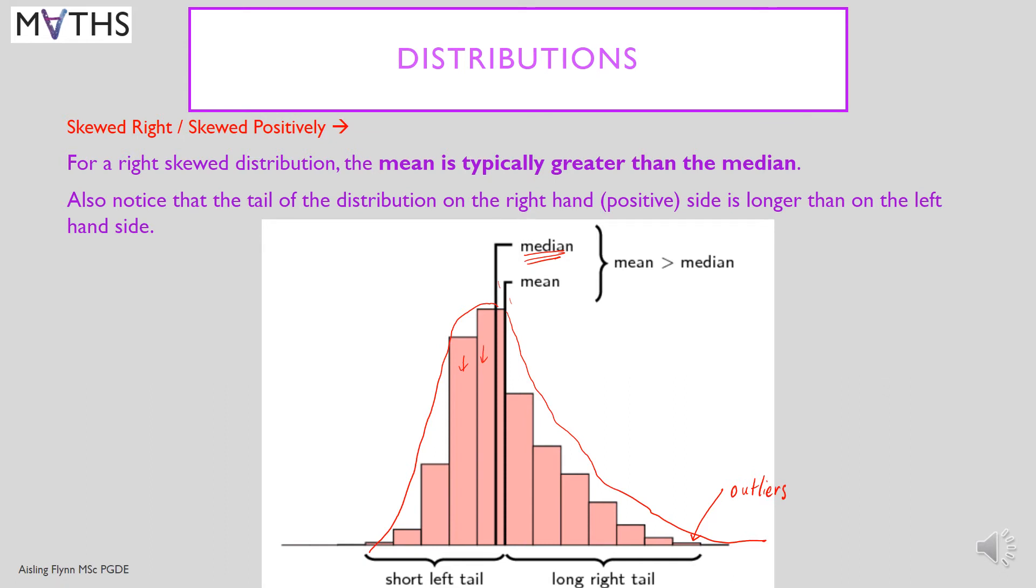They are of large value. And what this does when you calculate the mean, remember the mean is all of the values added together and divided by how many. So these large outliers when you add them in to calculate the mean, they produce a mean that is bigger than the median. So they increase the mean.